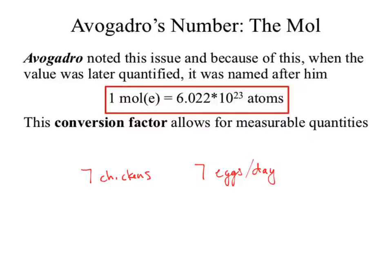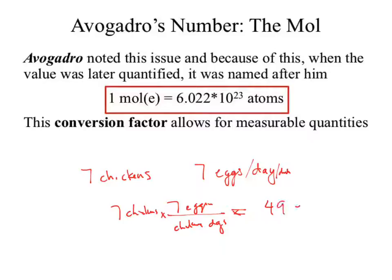How many eggs does the farmer get at the end of the day? Seven chickens times seven eggs per chicken per day — chickens cancel — gives 49 eggs per day.